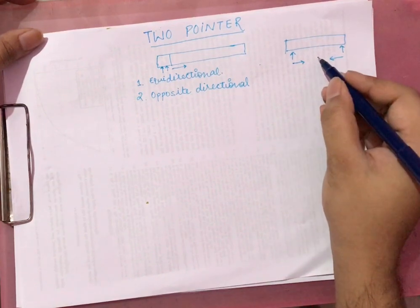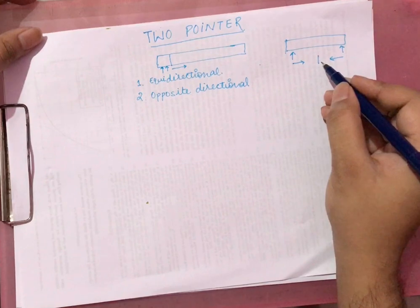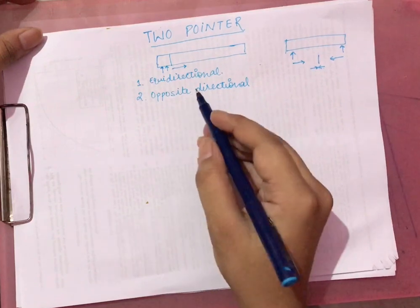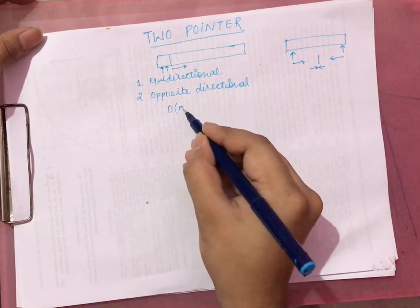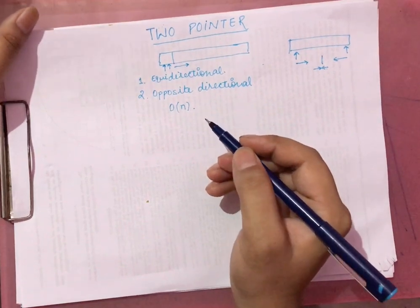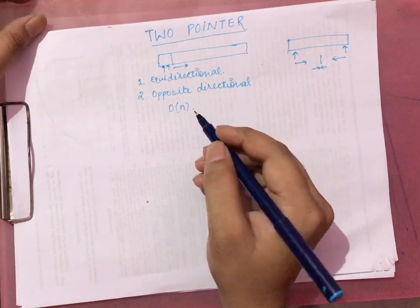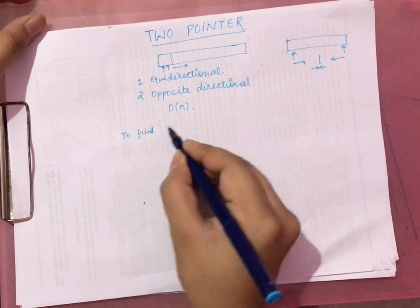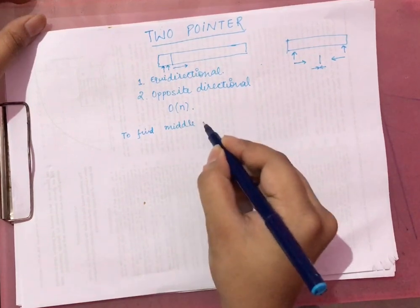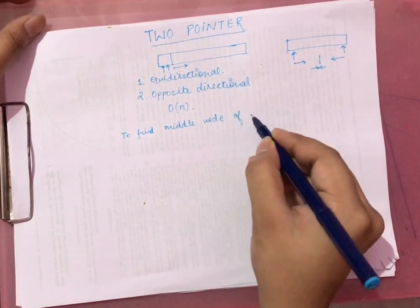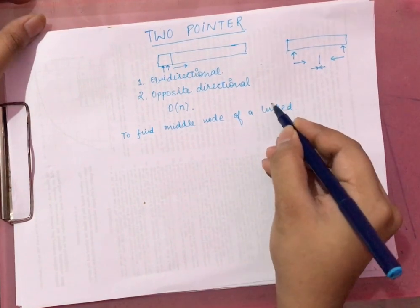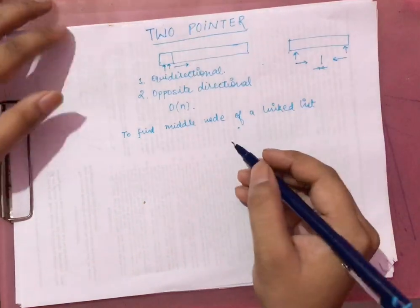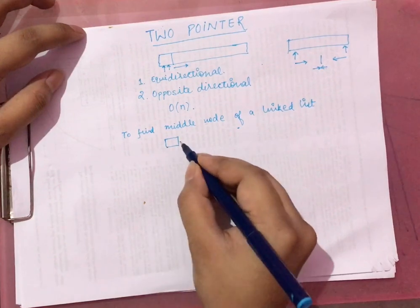They meet at the point where the search ends. Both of these approaches are O(n). One example of the equidirectional pointer is to find the middle node of a linked list.